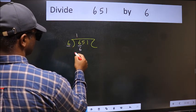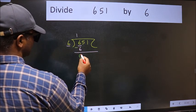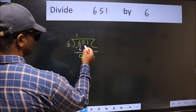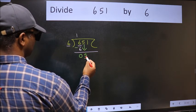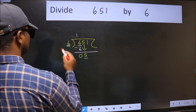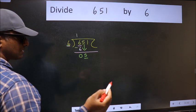6 times 1 is 6. Now we should subtract and we get 0. After this, bring down the beside number, so 5 comes down. Now we have 5 and 6 here. 5 is smaller than 6, so we should bring down the second number.